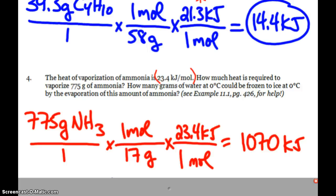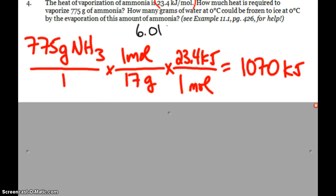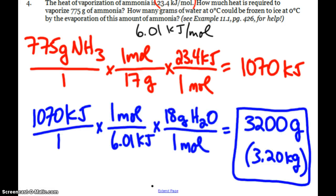Now, the interesting part of this, how many grams of water could be frozen to ice by the evaporation of this amount of ammonia? What we need to know is that we have our heat of fusion of water is 6.01 kilojoules per mole. We just do this problem backwards. We know that we have 1,070 kilojoules. I use the heat of fusion of water to change that to moles. I use the molar mass of water. And that means 3,200 grams of water could actually fuse, become a solid, frozen to ice with that amount of heat.